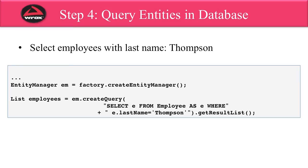In the previous step, we stored an employee in the database. Now, what we'd like to do is query for employees. In step four, we're going to select employees that have the last name of Thompson. When we do a query, we make use of the JPA query language, which is similar to SQL but more object-based. In the code here, I make use of my EntityManager and call em.createQuery(), saying 'select e from Employee as e where e.lastName equals Thompson.' Here, e.lastName is the actual property I'm referring to. I then get the actual result list, which gives me a list of all employees with the last name of Thompson and returns it to me as a list, which I can use in other parts of my application.